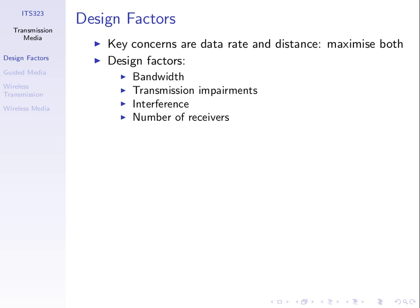We need to choose a technology that gives us a high data rate and long distance. Some of the factors that impact include the bandwidth of the signals, transmission impairments, and interference.